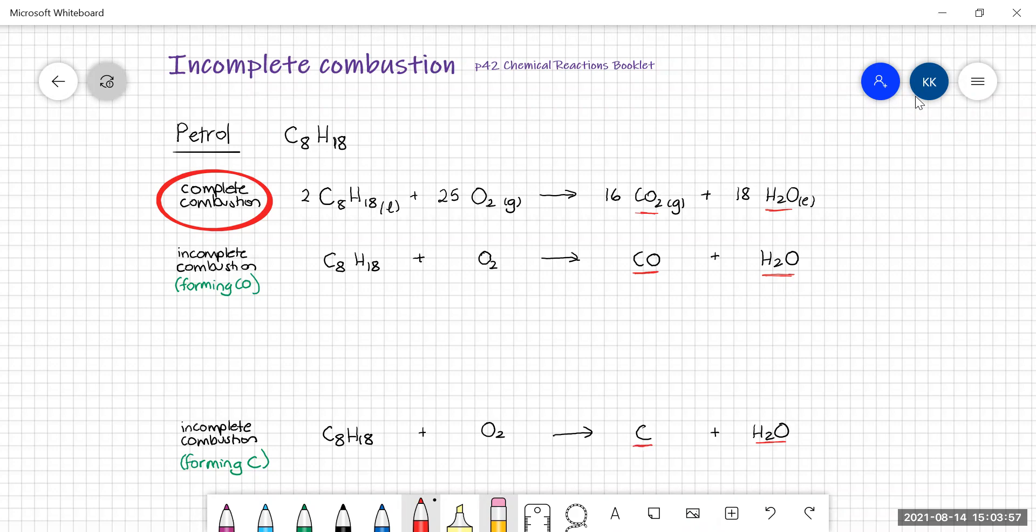Let's have a go at balancing some incomplete combustion reactions. Two different types. First of all, the one that occurs when you've got moderate amounts of oxygen, and that is forming carbon monoxide. So this is moderate oxygen, not plentiful oxygen, just moderate. And if you form carbon, then you know you've got very limited oxygen. This is a way for those combustion reactions to still occur in the presence of less oxygen.